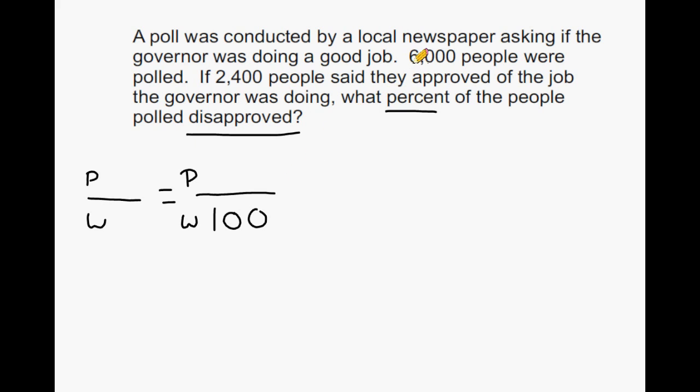The next thing that we want to do is take the 6,000 here and write that for a denominator as well. Just by reading the problem, we should be able to tell that 6,000 is a total quantity because 6,000 people in all were polled.